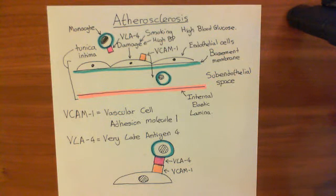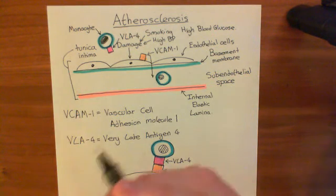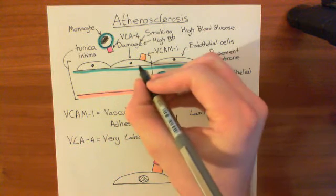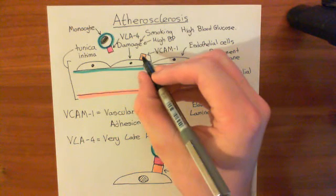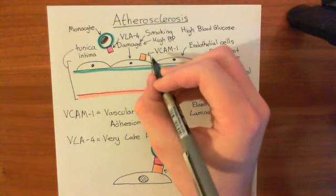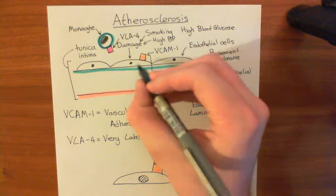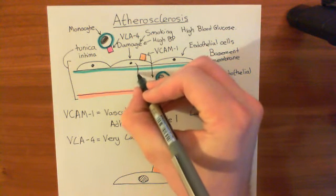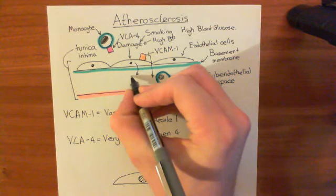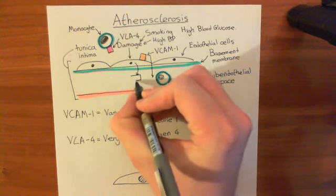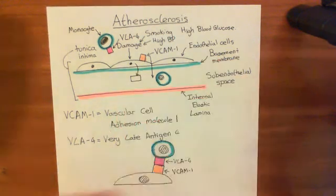Now, what's going to happen next? Well, basically, what's going to happen is these endothelial cells, you remember I told you that when they get damaged, they don't just put VCAM-1 on their surface, they also do more. And they're going to release a protein known as M-CSF.